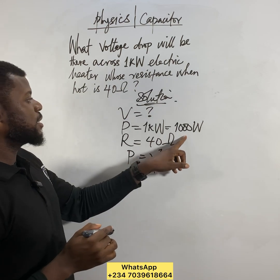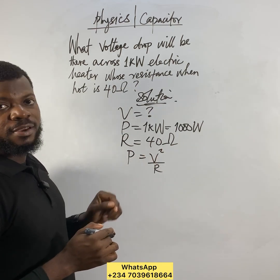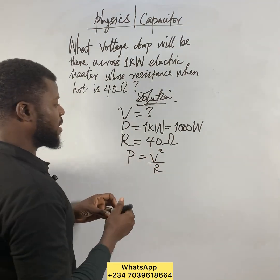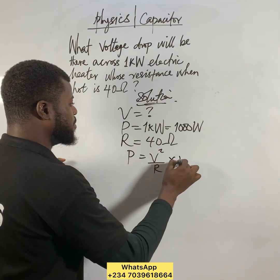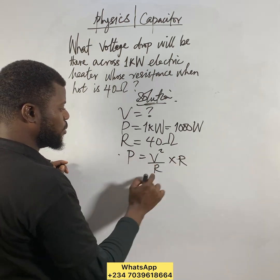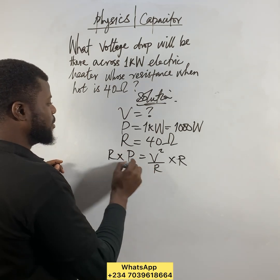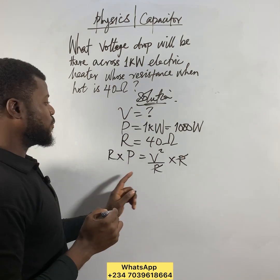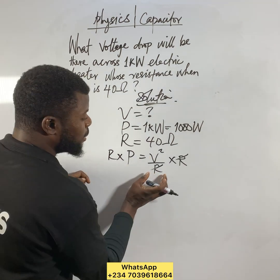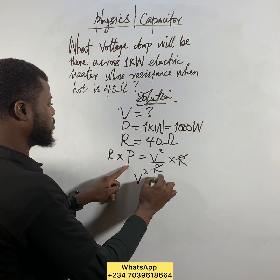They already gave us power and resistance, so we need to find V. Starting from P equals V squared over R, I'll multiply both sides by R to remove the denominator. That gives us V squared equals P times R.